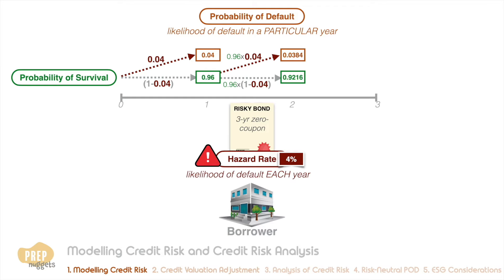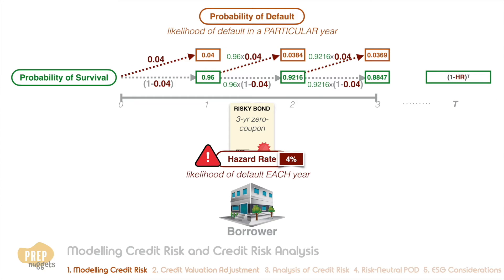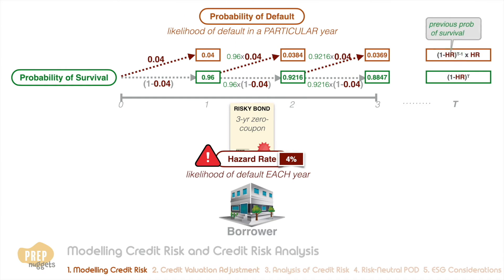Repeating again for the third year, we have a 3.69 percent probability of default and 88.47 percent probability of survival. For any given year t with a constant hazard rate, the probability of survival is (1 minus the hazard rate) to the power t, and the probability of default is the previous year's probability of survival times the hazard rate.